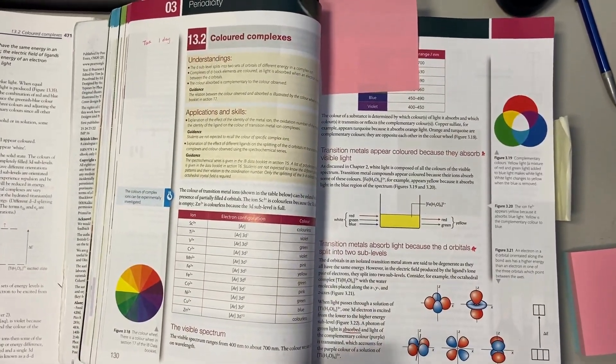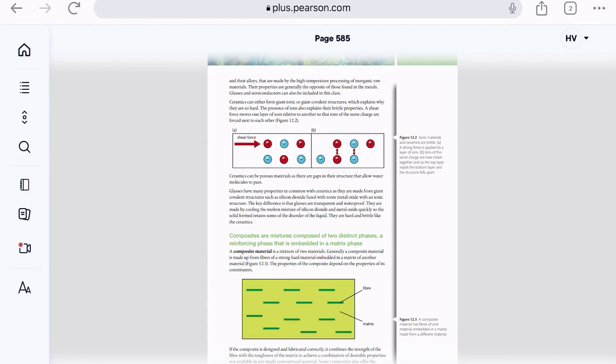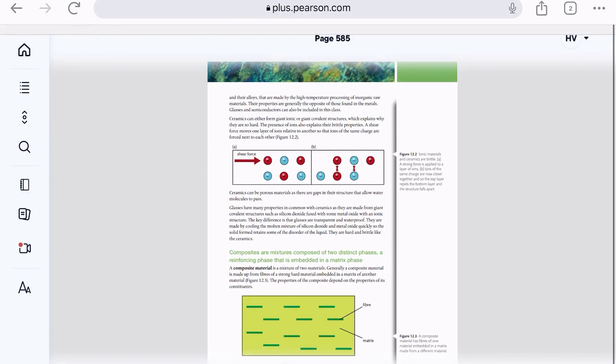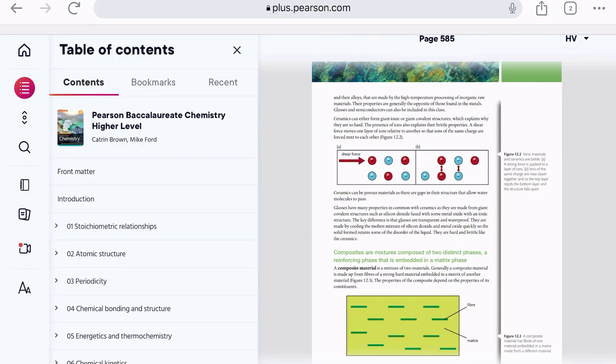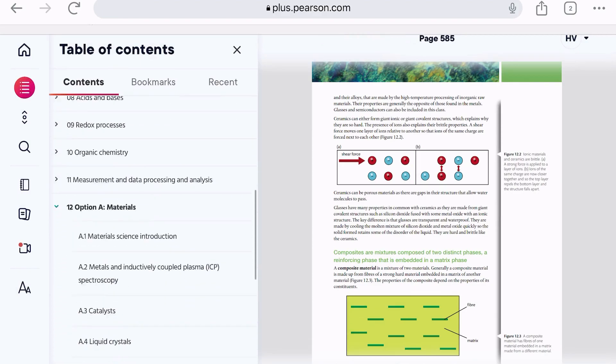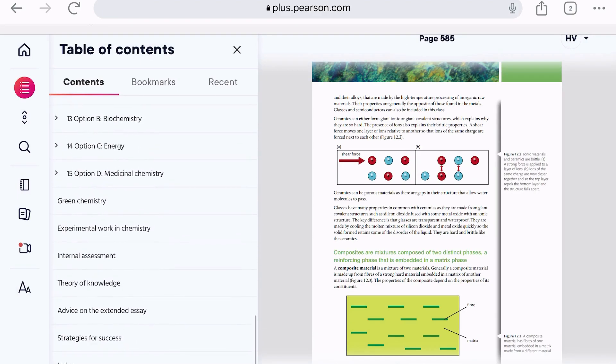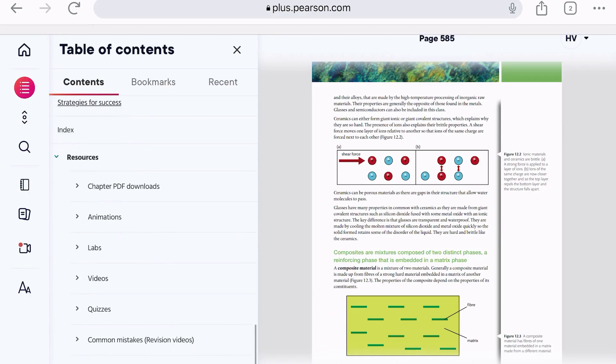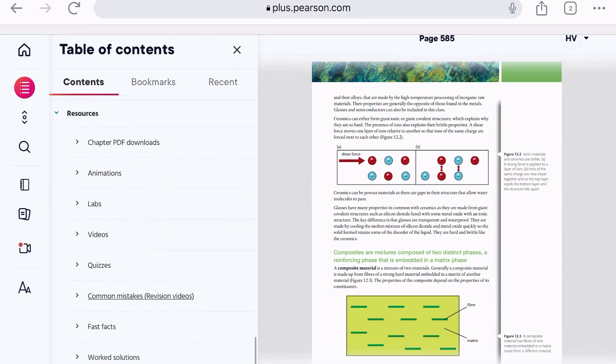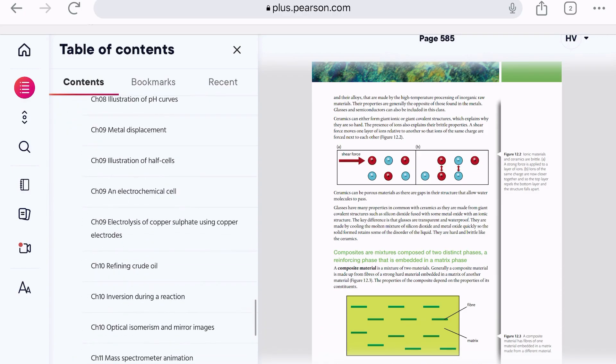I did also want to briefly show you the Pearson textbook online. One thing that I think is a super neat feature, especially if you are a teacher or even a student, is you can actually download PDF chapters of the book if you go to resources. So if you wanted to put them on your Google Classroom, which is what I do, or if you were going somewhere that doesn't have internet but you want to study your chemistry, you can download the chapter PDFs. There's also animations for every section, there's labs for every section.